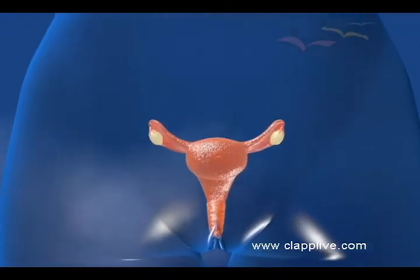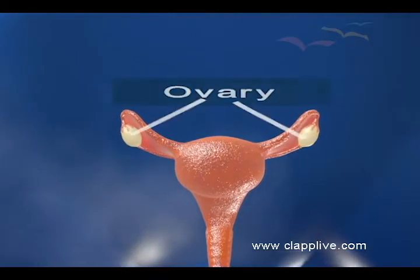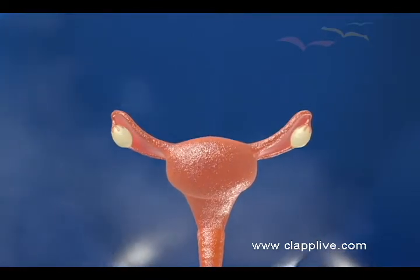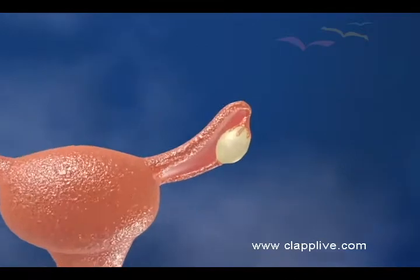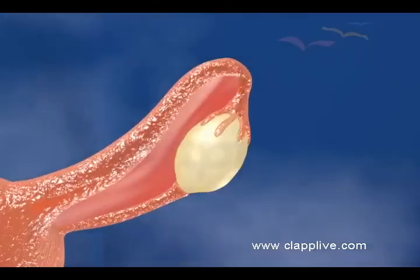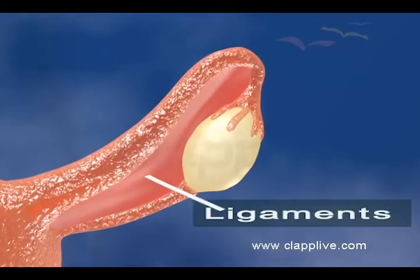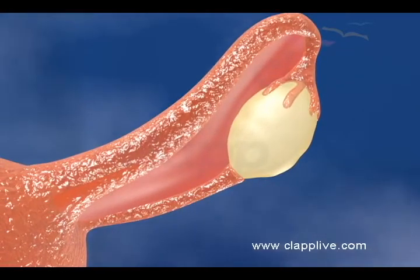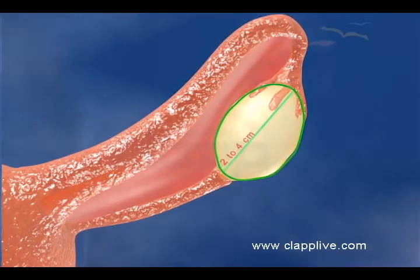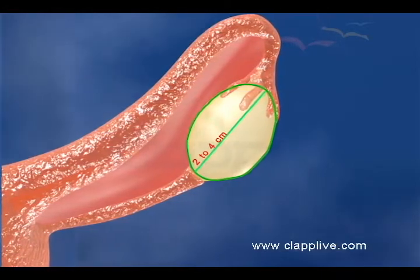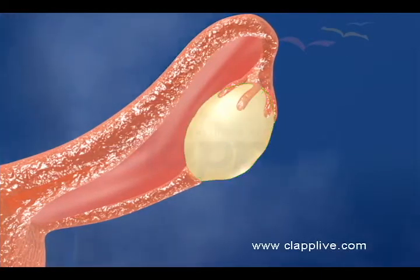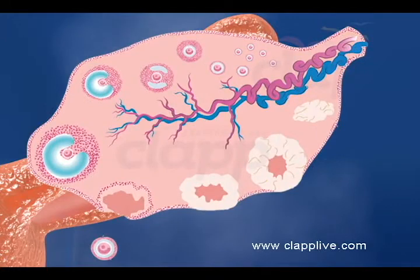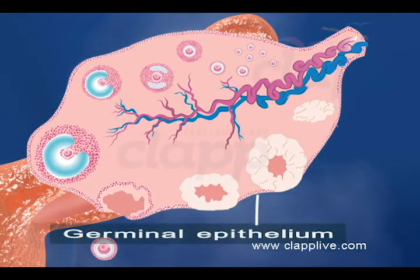Ovaries are the primary sex organ of a female. They are solid structures located in the lower part of the abdomen. They are connected by ligaments to the uterus and lateral pelvic wall. Each ovary is 2–4 cm long and 2 cm wide. It is composed of connective tissue called stroma, covered by a layer of germinal epithelium.